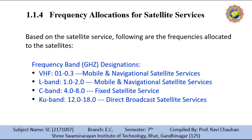Based on the satellite services, the following frequencies are allocated to satellites. The frequency band designations include: VHF (0.1–0.3 GHz) for mobile and navigation satellites, L band for mobile and navigation satellites, C band for fixed satellites, and Ku band for direct broadcast satellites for TV transmission.